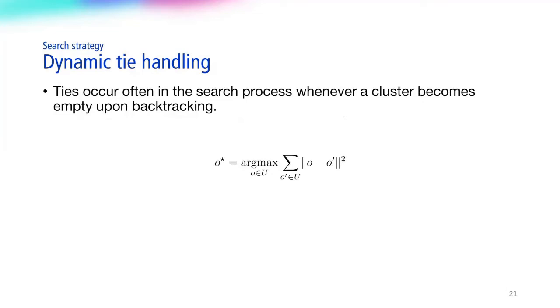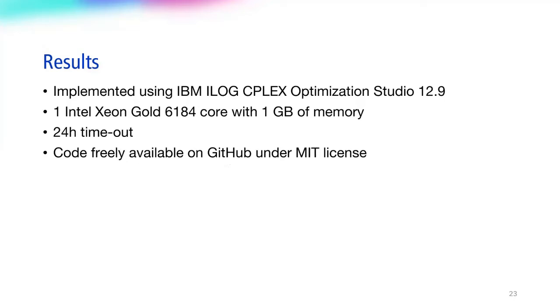They also maximize the likelihood alternate branches will fail the closer they are to the top, eliminating bigger subtrees. The main search is similar to the one proposed by Dow et al. However, we observed that it suffers from a flaw in that it doesn't address ties which occur often in the search process due to empty clusters. We choose to supplement this search with a dynamic tie handling procedure, one that adheres to the fail-first principle by choosing the poorest points where to start new clusters. To test our approach, we implemented it using IBM iLog CPLEX Optimization Studio 12.9. For each run, we limit runtime to 24 hours on a single Intel Xeon Gold 6184 core with 1GB of RAM. Our code is freely available on GitHub.